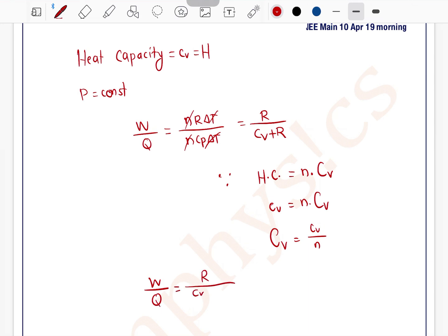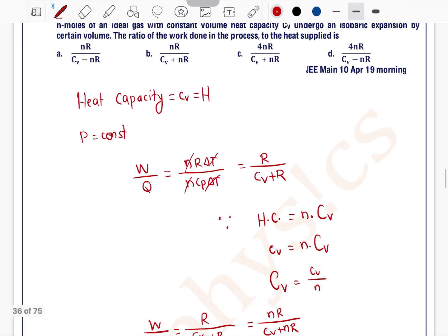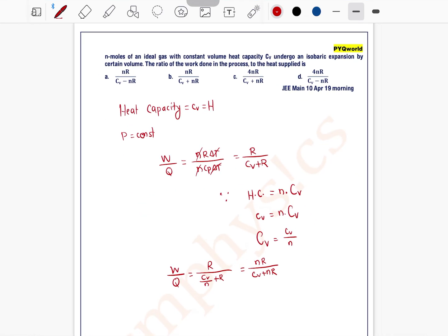Which equals NR divided by Cv plus NR. So the correct option is NR by Cv plus NR - option B is the correct option.